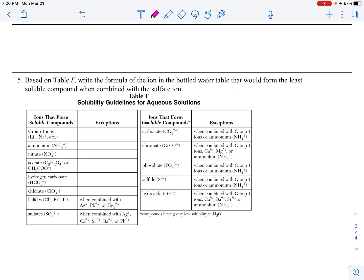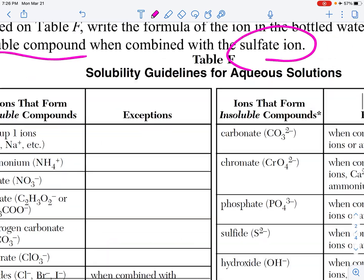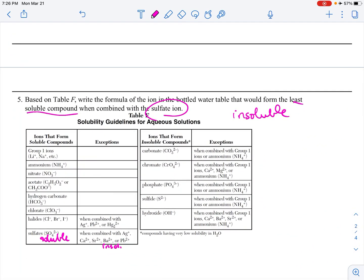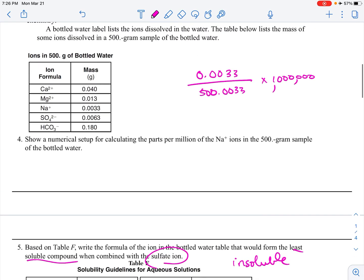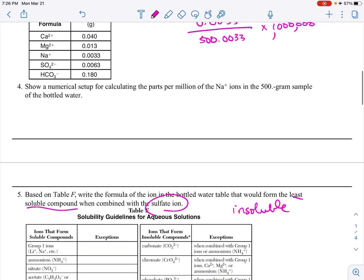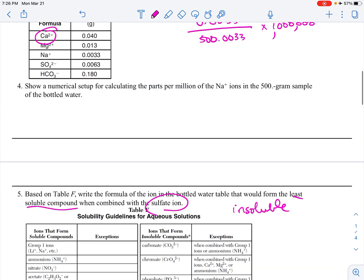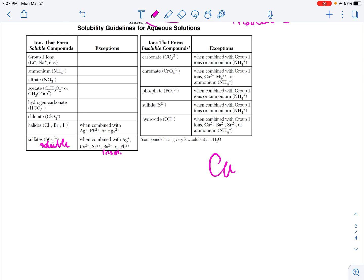So based on table F, write the formula of the ion in the bottled water that would form the least soluble compound when combined with sulfate. So that is code for insoluble with sulfate. So sulfate, when combined with Ag+, these are the exceptions. So this would mean it's soluble, but this is when it is insoluble. These are the exceptions. So it says the least soluble, Ag+, Ca2+, all that stuff. Let's see. Silver is not on the chart. Calcium is on the chart. So that's probably our answer. Strontium is not on the chart. Barium is not on the chart. And lead 2+ is not on the chart. So we're going to go with calcium +2.